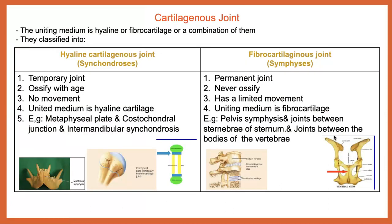The second type of joint is the cartilaginous joint, where the uniting medium is hyaline cartilage, fibrocartilage, or a combination of both. Cartilaginous joints are classified into three types: the first is the hyaline cartilaginous joint, or synchondrosis; the second is the fibrocartilaginous joint, or symphysis. We can now compare these two types.